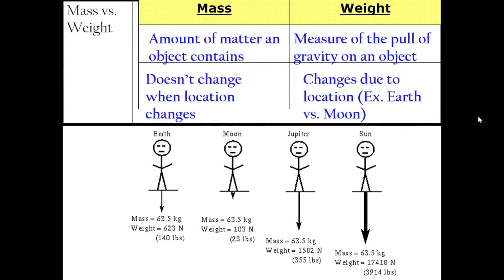On Earth, we experience a weight of 623 newtons. On the Moon, we experience a weight of 103 newtons. Because we experience less weight on the Moon, it allows astronauts to jump super high — instead of applying force to 140 pounds, they're only applying force to 23 pounds. On Jupiter, astronauts would feel two times as heavy as on Earth. On the Sun — other than being burned alive — they would feel 20 times heavier. Feeling 20 times heavier than on Earth is like getting crushed by a car.